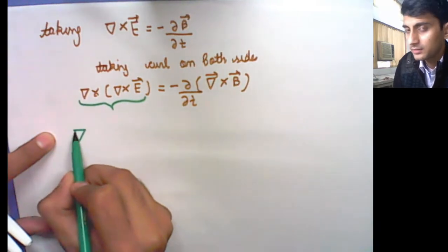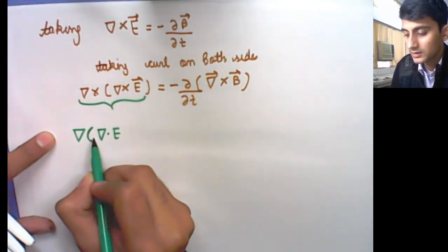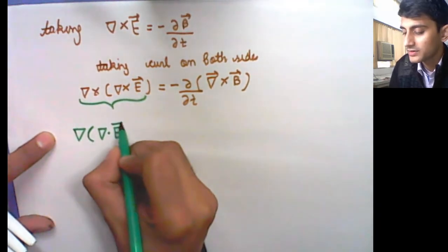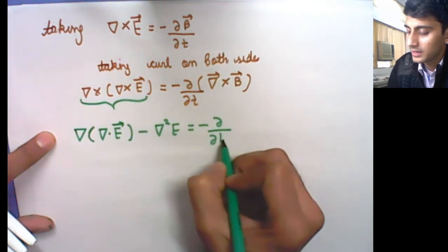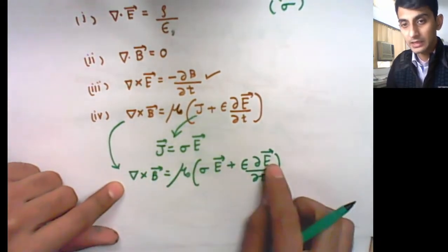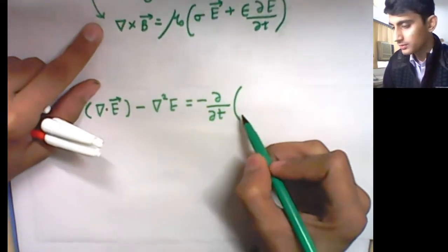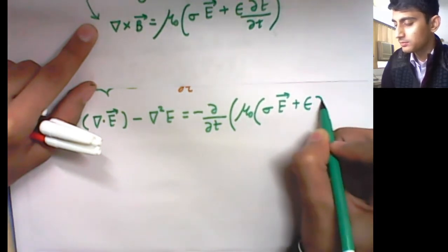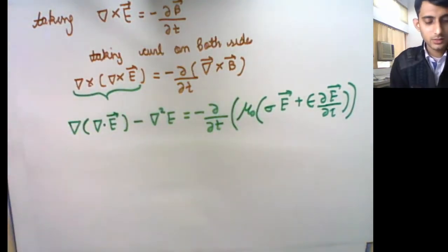Using the standard vector identity, curl of curl of E equals gradient of divergence of E minus Laplacian of E. The right-hand side gives minus del by del T of del cross B. Substituting the known value of del cross B, which is mu sigma E plus epsilon del E by del T, we get the expanded equation.